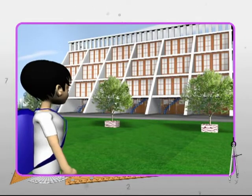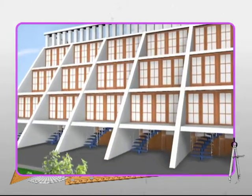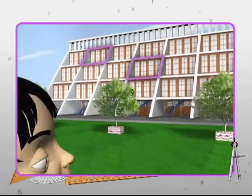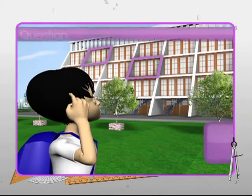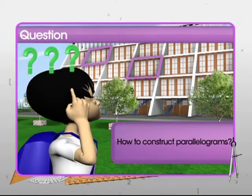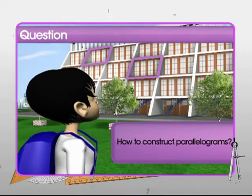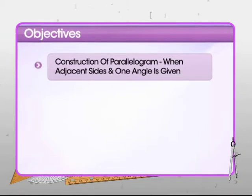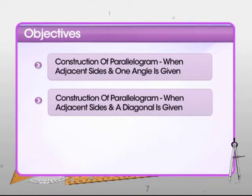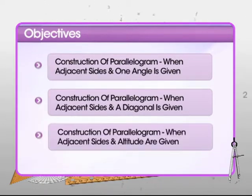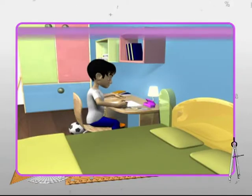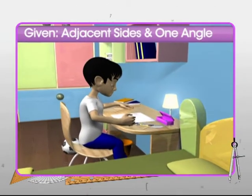Johnny, while heading towards his school assembly, noticed the geometrical designs on the building of his school. He wondered how such parallelograms are constructed. Let's learn along with Johnny the methods to construct parallelograms — when adjacent sides and one angle are given, when adjacent sides and a diagonal are given, and when adjacent sides and altitude are given.